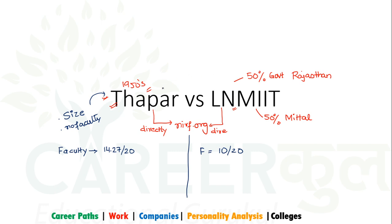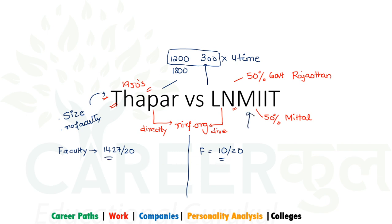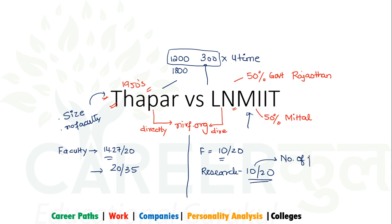The difference is in size. Thapar takes around 2000 students this year, and last year almost 1800. LMNIT had at least 1200 — but with submitted data it may be around 300 per batch — so it has become almost 4 times larger. That is a little low, around 10 out of 20. But again, this is the number of papers published.